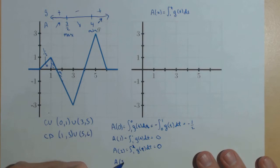A of 3 is the integral from 1 to 3 of g of t dt, which is going to be, and we'll make this split, we won't write it for everyone.